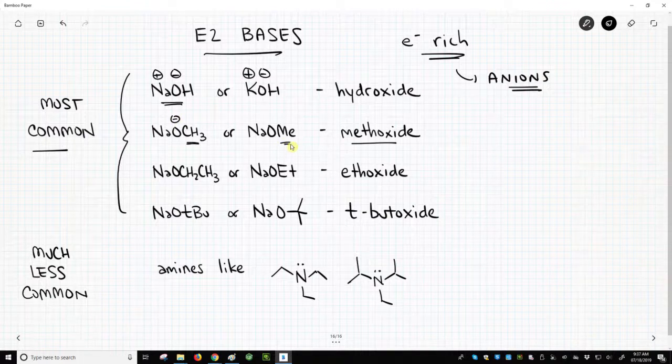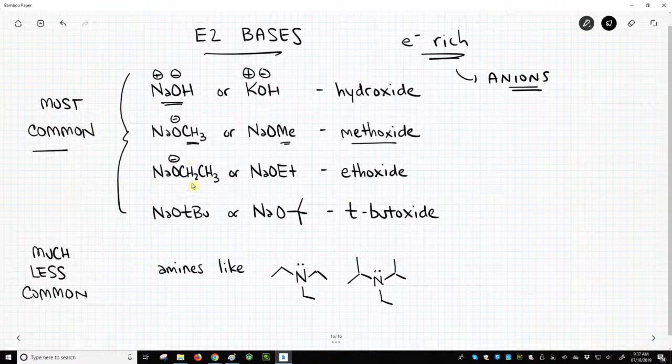You can also use ethoxide. It's an O minus with, instead of methyl, it's an ethyl chain. You might just write ET instead for ethoxide, another alkyl oxide.